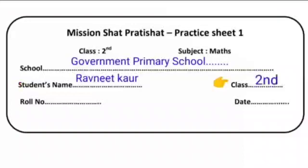Next is class. Here you all will write second. Next is roll number. Here you will write your class roll number. Like Ravneet Kaur's roll number is 12. Next is date. Here you will write today's date. Like today's date is 1 February 2021.